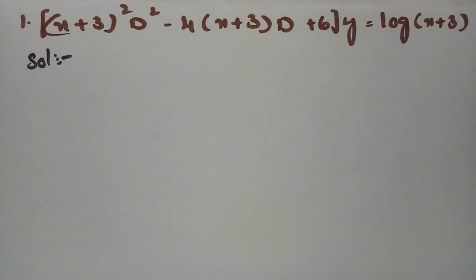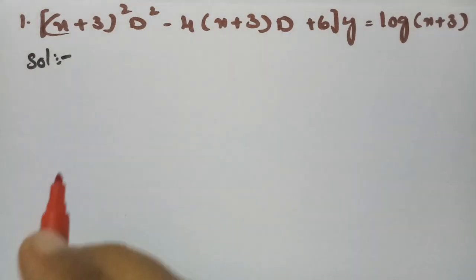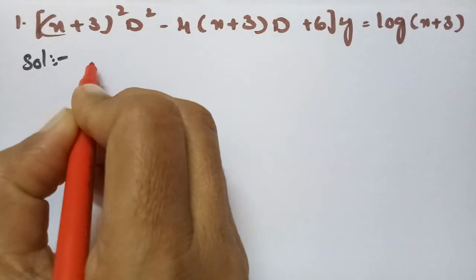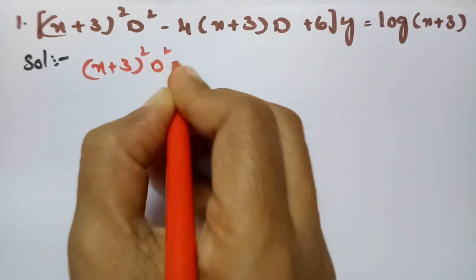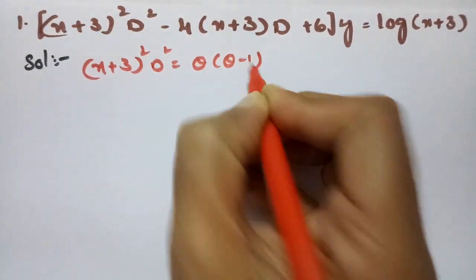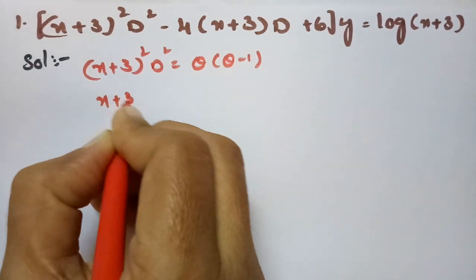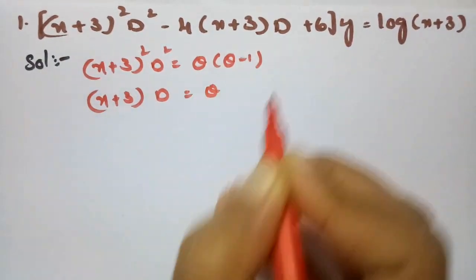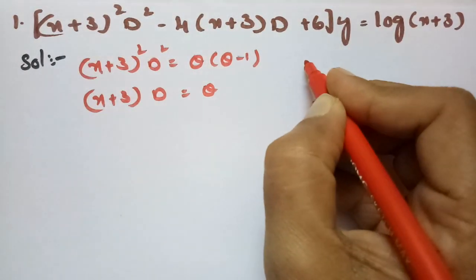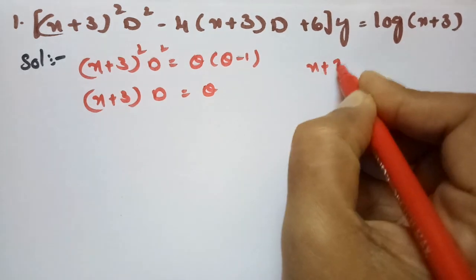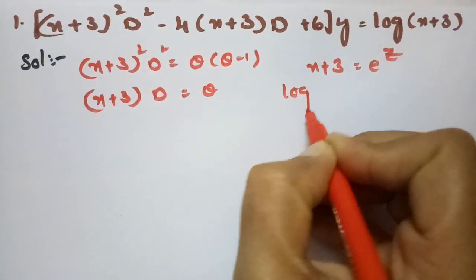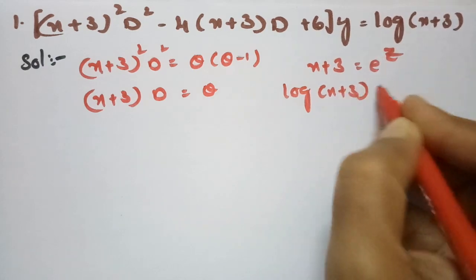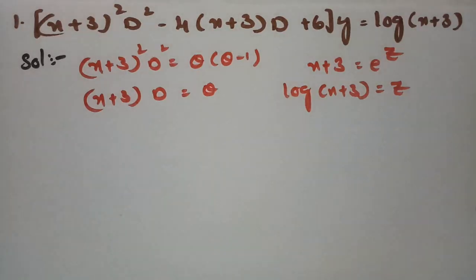For this example, the substitution is: x + 3 = e^z and log(x + 3) = z. Using this, (x+3)^2 · d^2y/dx^2 is replaced by θ(θ-1), and (x+3) · dy/dx is replaced by θ. This is the substitution we put into the equation.